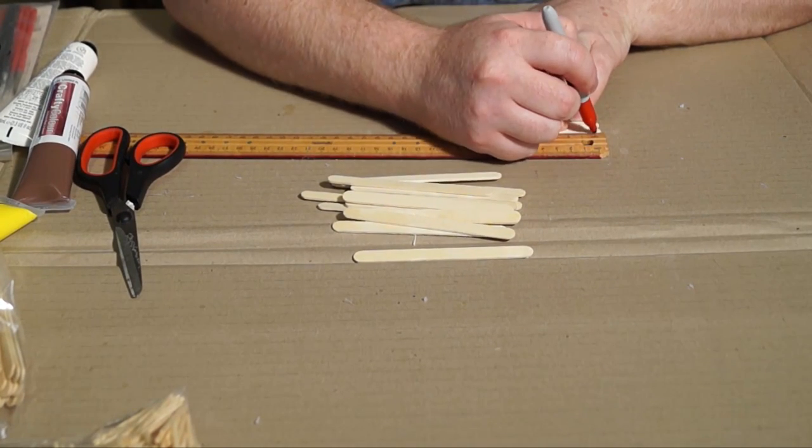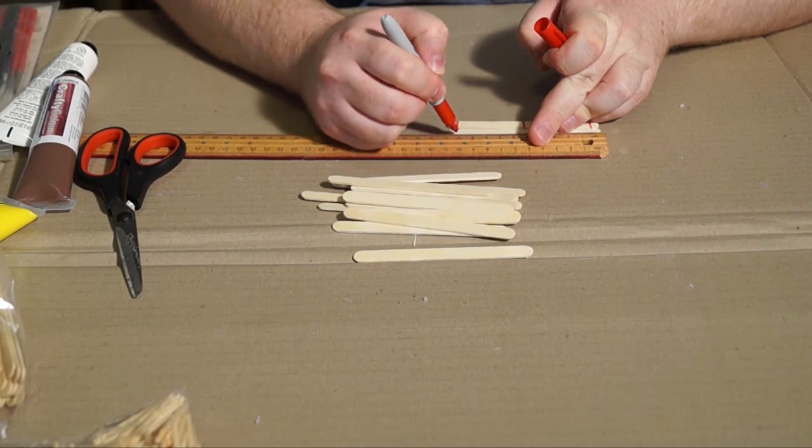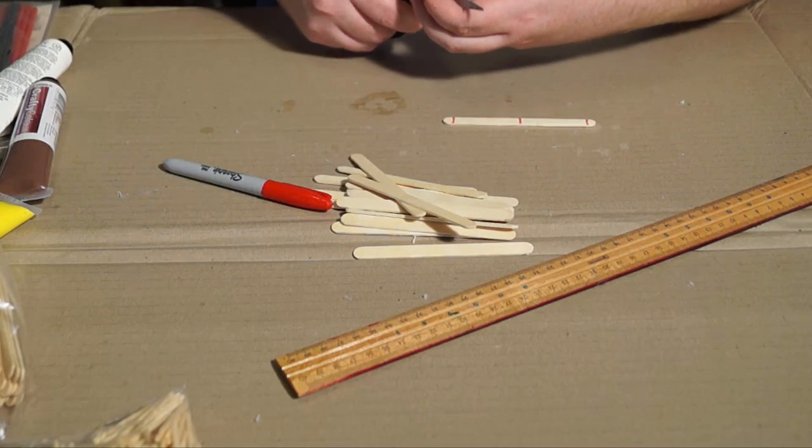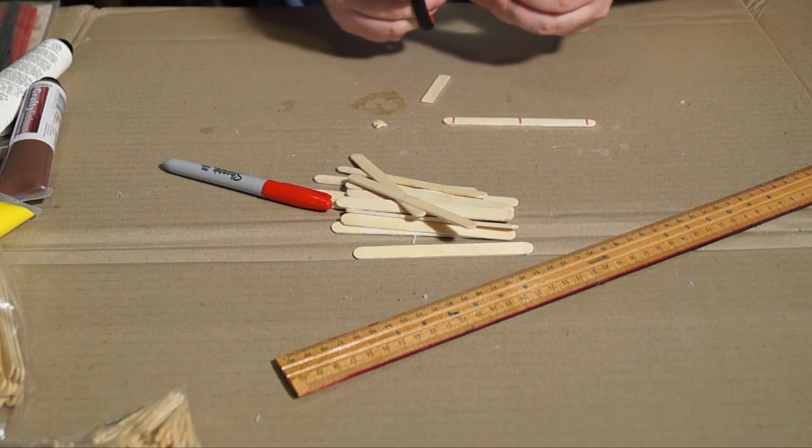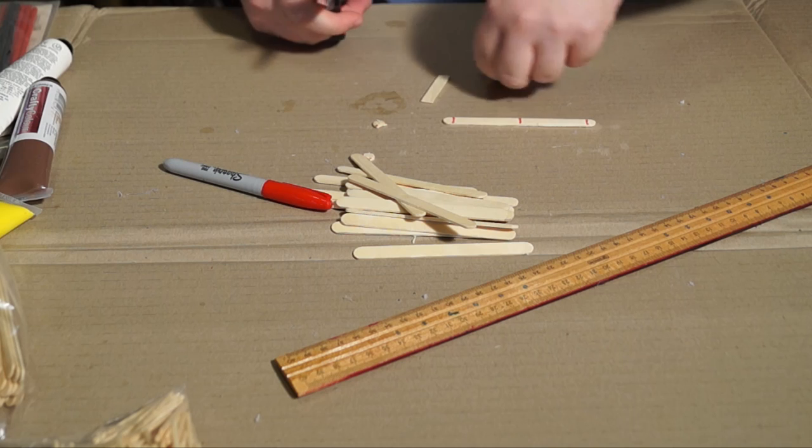Measure across a whole bunch of them and then just lop off the curled ends and cut them in the middle and produce eight of those.